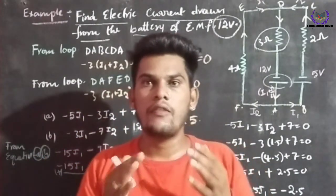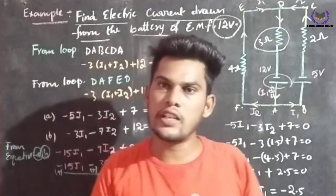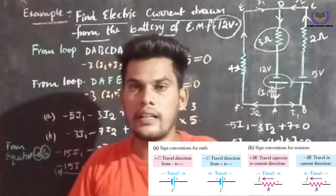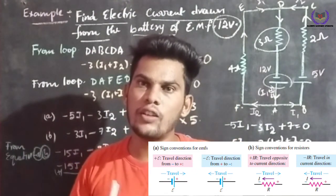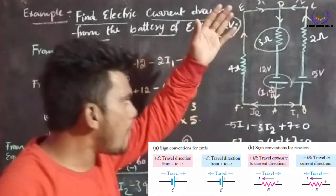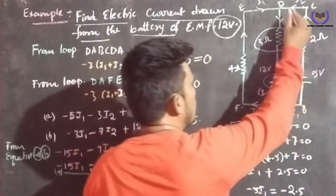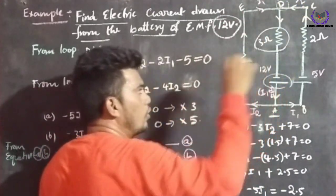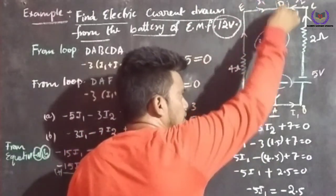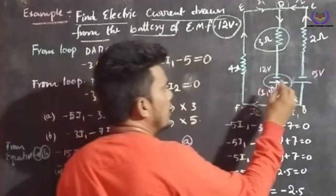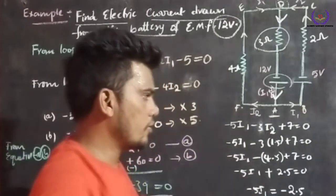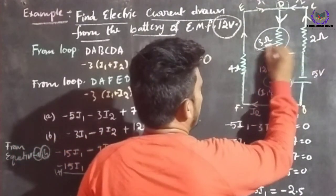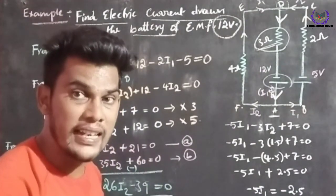For voltage: when we are going from the negative terminal to the positive terminal of a battery, the value is positive. When going from the positive terminal to the negative terminal, the value is negative. These are the sign conventions. Now applying them: I start from point D moving down. My loop direction and the current direction are both the same, so the resistor value is negative: minus 3 ohms.